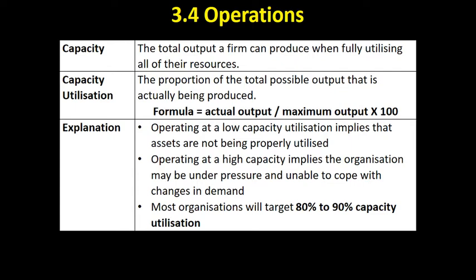Capacity utilisation is the proportion of total output that is actually being produced. If a factory working flat out — all the machines are on all the time, the workforce is working full time and maybe even a little overtime — can produce 500 units, its capacity is 500. However, if we're only producing 400 units, the capacity utilisation is calculated by dividing actual output (400) by maximum output (500) and multiplying by 100, which gives 80%.